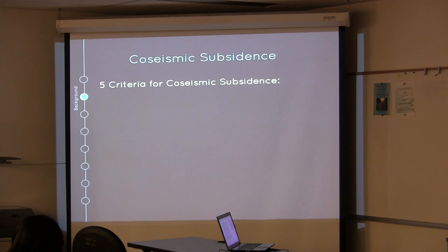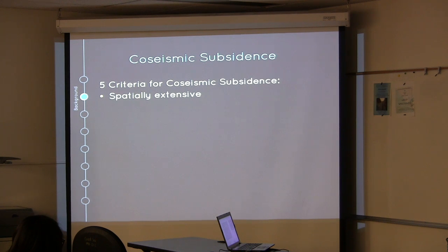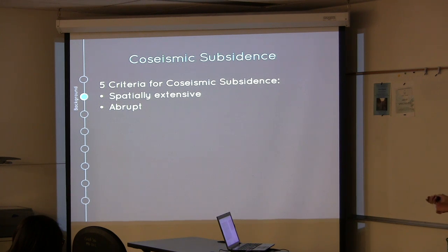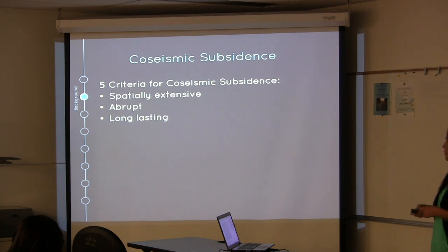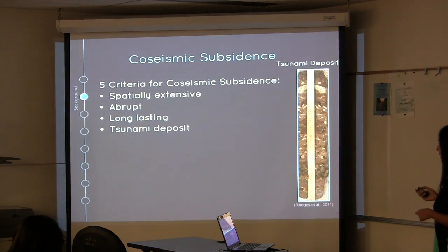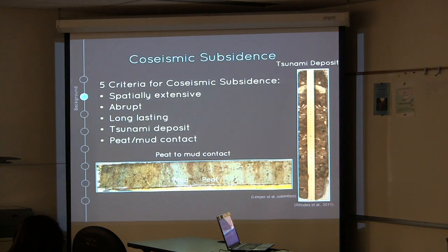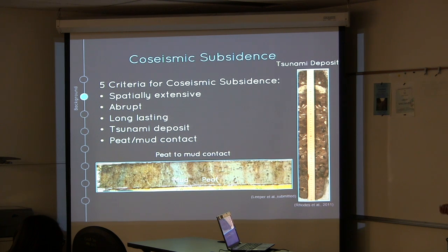The five criteria for co-seismic subsidence were: that it was spatially extensive — occurring in multiple locations in that one area; an abrupt contact, meaning a sharp sedimentary change; long lasting, with a prolonged change in the depositional environment; coincident with tsunami deposits; and characterized by peat-to-mud contacts. Peat is a very high organic-rich sediment, whereas mud is a very low organic-rich sediment.